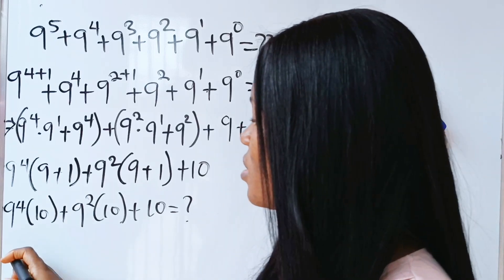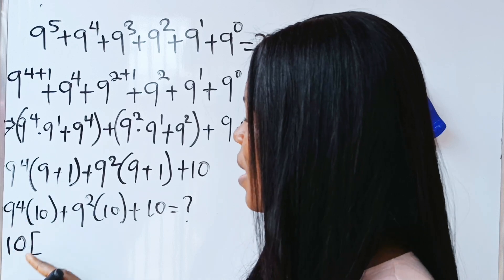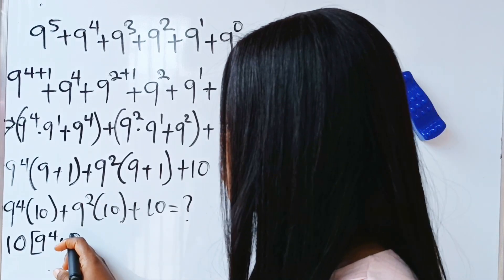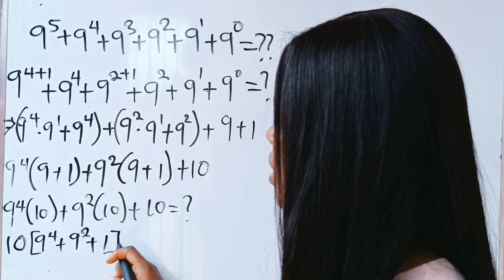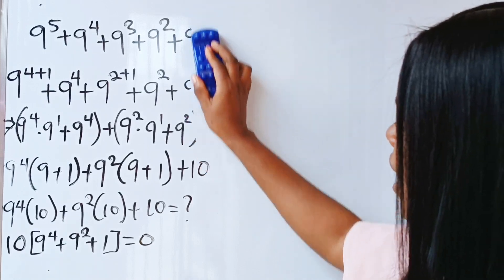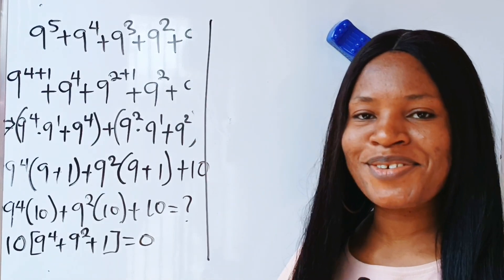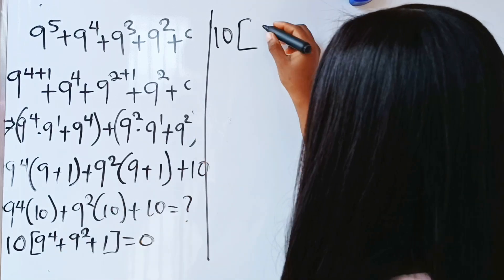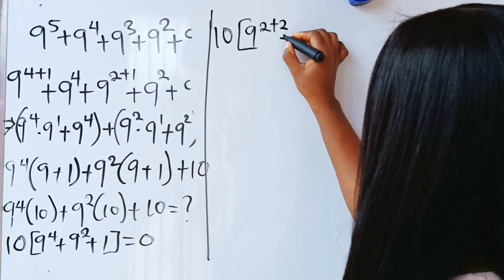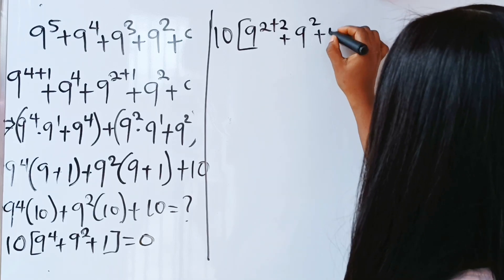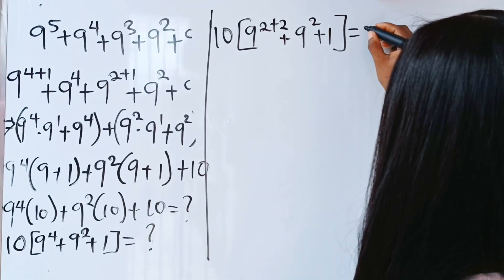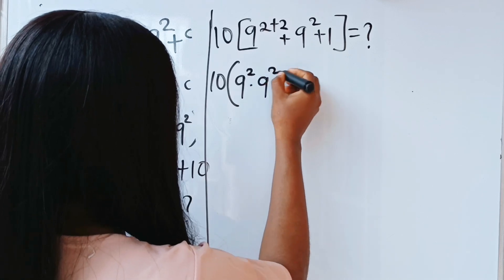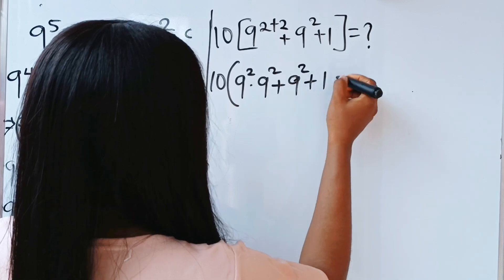We write 10 and open our brackets. When this is divided by 10 you have 9 to the power of 4 left, plus 9 to the power of 2 left, plus 1. Recall that a calculator is not allowed. So we continue simplifying. Now 9 to the power of 4 can be written as 9 to the power of 2 plus 2, then plus 9 to the power of 2, plus 1. This is the same as 9 to the power of 2 multiplied by 9 to the power of 2, plus 9 to the power of 2, plus 1.